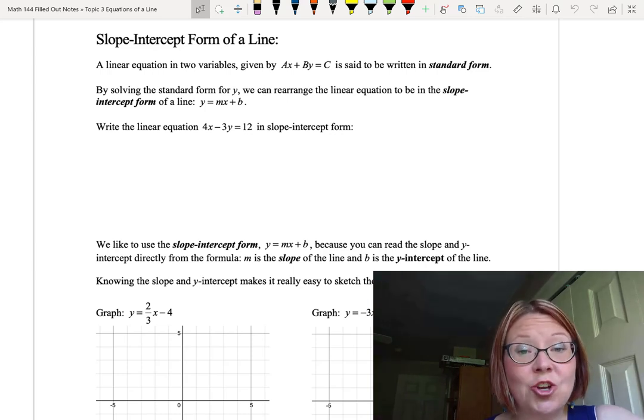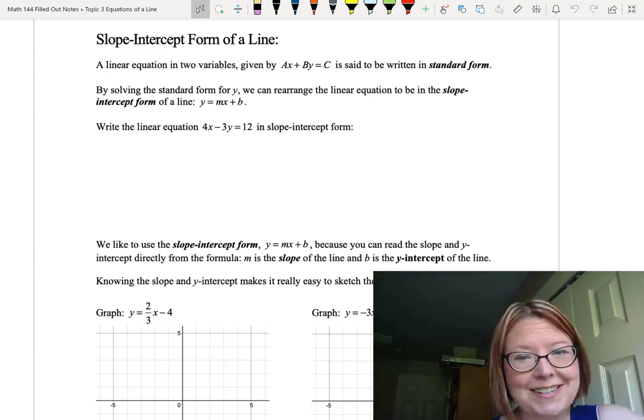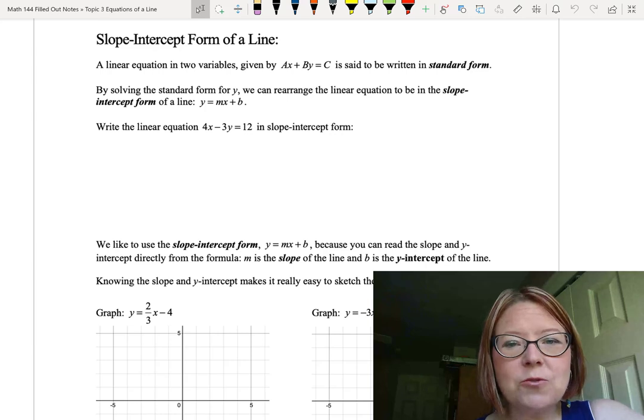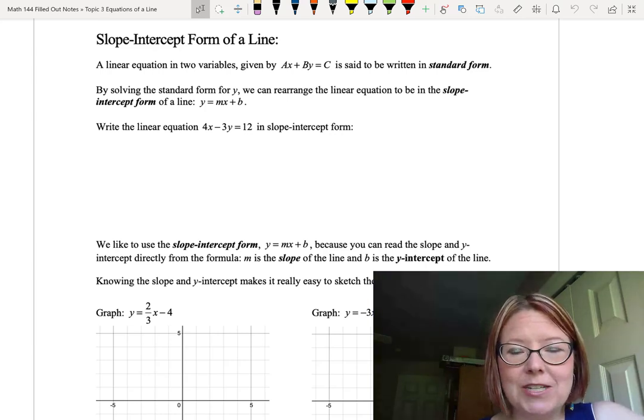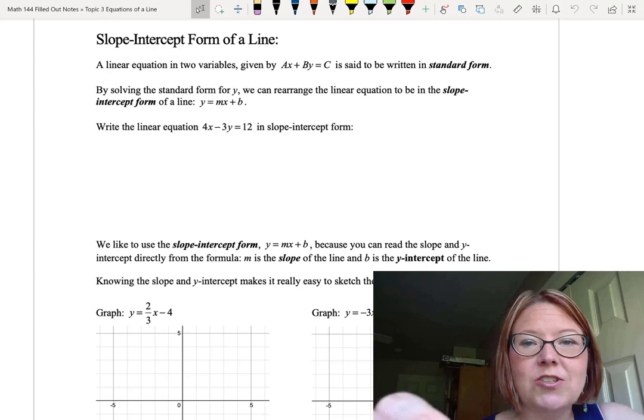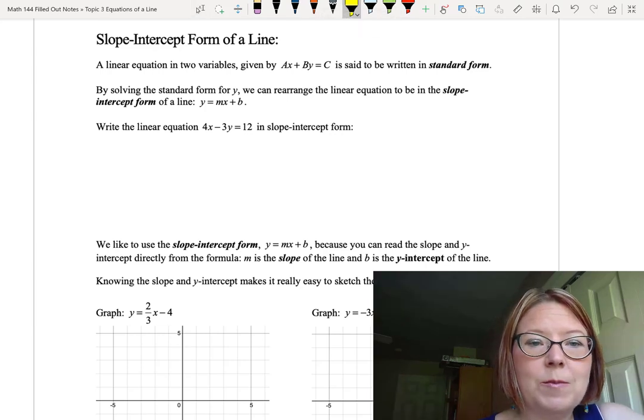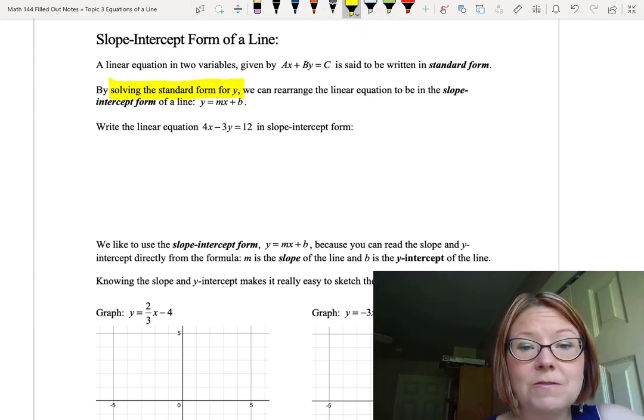To show you how you would do this, we're going to start with the linear equation 4x minus 3y equals 12, which is currently written in standard form, and we're going to rewrite it in slope-intercept form. In other words, we're going to solve that standard form for y.